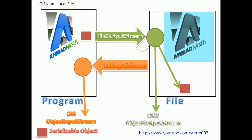The same process applies when we need to read the object from the file — we just use the opposite direction. We need the FileInputStream. We take this object, move it across the FileInputStream, then move it to the ObjectInputStream. With the ObjectInputStream we read the object from the file and get it back into the program. The same rule applies throughout.